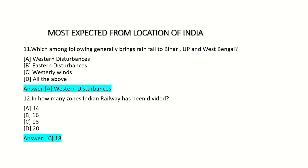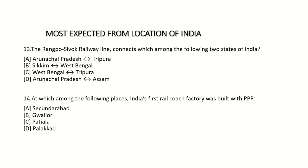13th question: The Rangpo-Sivok railway line connects which among the following two states of India? Option A: Arunachal Pradesh to Tripura. Option B: Sikkim to West Bengal. Option C: West Bengal to Tripura. Option D: Arunachal Pradesh to Assam. Answer: Option B — Sikkim to West Bengal.